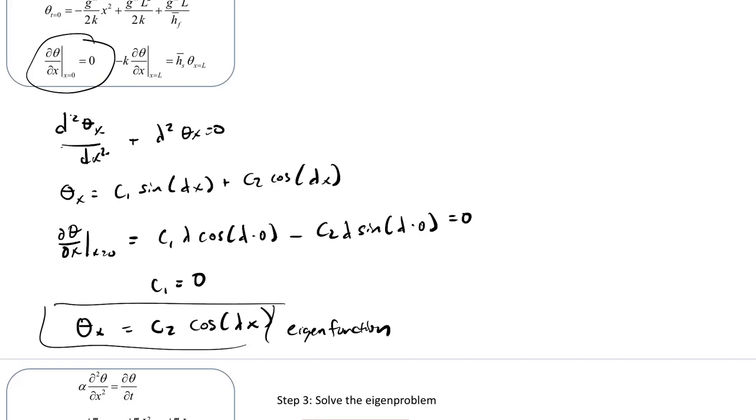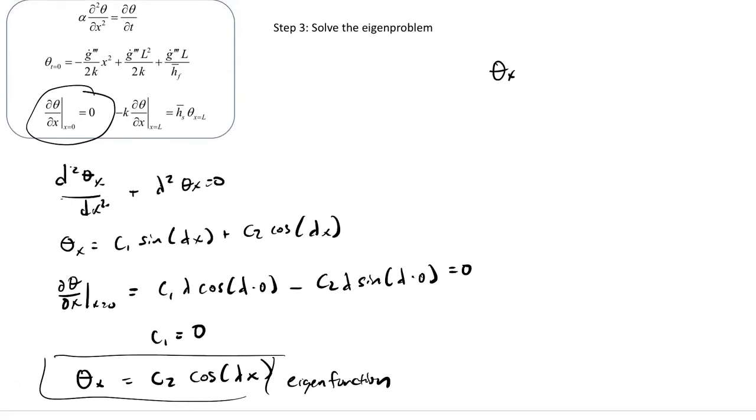So now enforcing the other boundary condition that at the convection boundary, we have minus K times theta dX at X equals L is equal to H bar times theta at X equals L. So we substitute in the derivative, multiply that by minus K, and then substitute in theta and multiply that by H. And we end up with K times C2 lambda sine of lambda L is equal to H bar S times C2 cosine of lambda L.